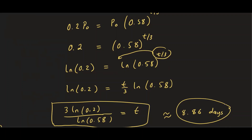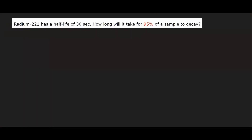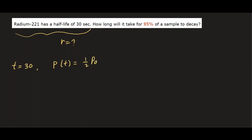Now let's look at another example. Radium-221 has a half-life of 30 seconds, and we want to know how long it will take for 90% of a sample to decay. From the half-life information, we know that when T = 30 seconds, the amount is half the original. This will help us find the decay rate.